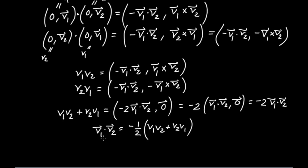So now if I solve for V1 dot V2, I have: V1 dot V2 is equal to minus one-half times (V1V2 + V2V1). Here you can see the relation between the dot product of two vectors and quaternion multiplication. If you wanted to compute the dot product between V1 and V2, you could load V1 into a quaternion (0, V1) and V2 into a quaternion (0, V2), then compute: take V1 times V2, add V2 times V1, and scale by minus one-half.